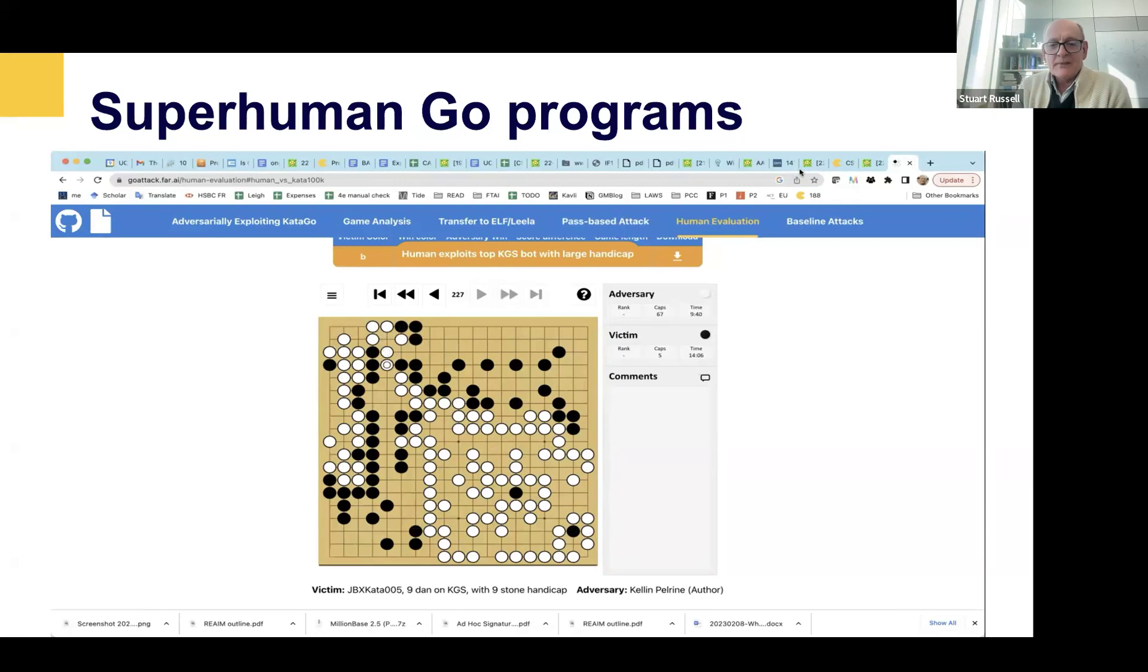Why doesn't black do anything about it? Black has many opportunities to save those stones, but completely ignores the threat and doesn't seem to understand that this group of stones is going to be captured. And there they are. They're gone. And now black has lost ignominiously to a relatively average human player.